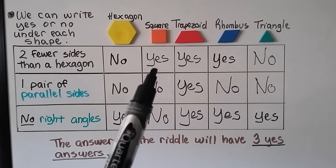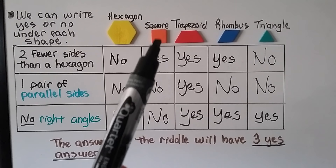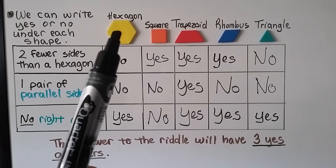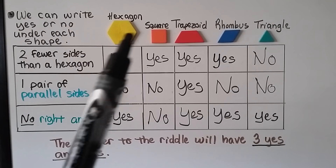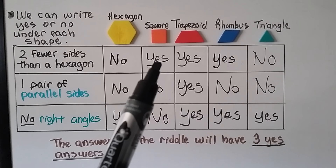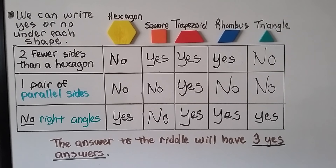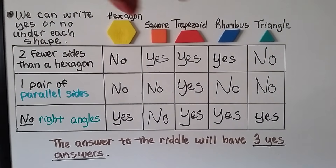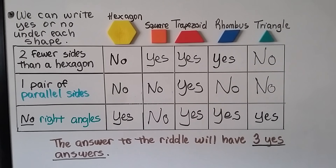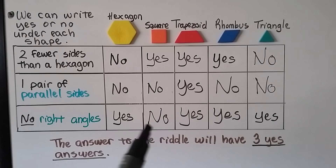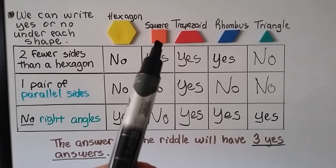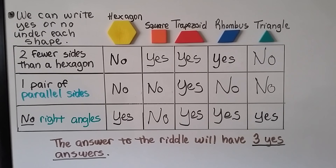What about a square? Does it have two fewer sides than a hexagon? A square has four sides, a hexagon has six, and four is two less than six — so yes. Does it have one pair of parallel sides? A square has the top and bottom parallel and the two sides parallel, so that's two pairs — no. How about no right angles? A square has lots of right angles — so no.